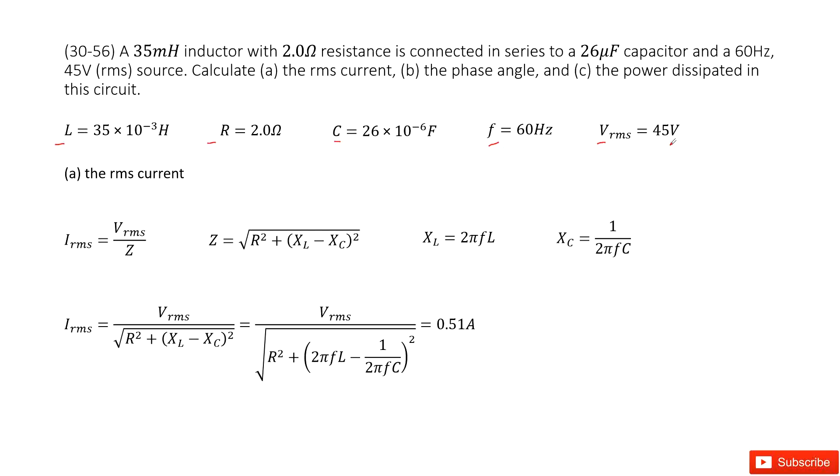Now first one, write down the root mean squared current. So very straightforward, we can write down the equation for root mean squared current as the voltage, root mean squared voltage divided by impedance. And this impedance is decided by R, inductance, and capacitance.